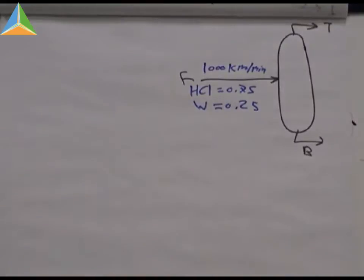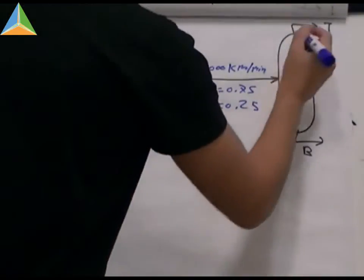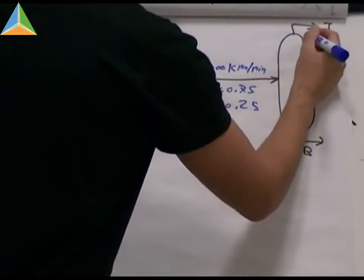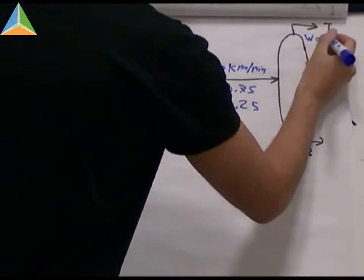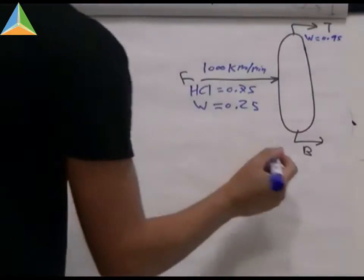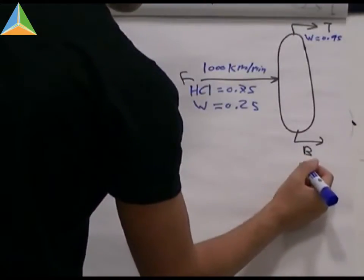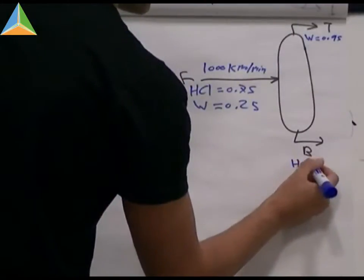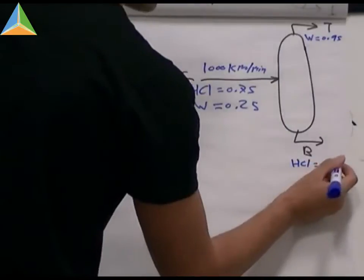And the top stream also we get 0.95 for the water. So for the bottom stream, we got HCl 0.9.